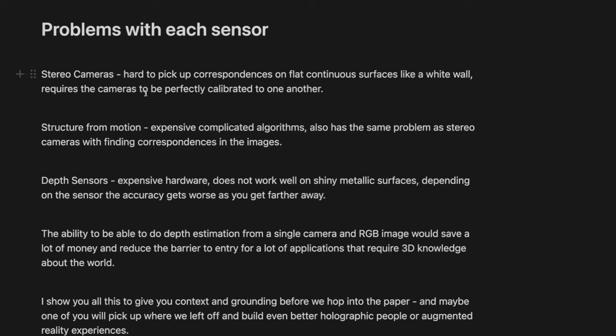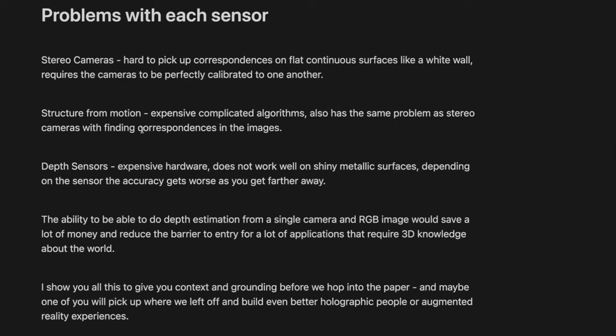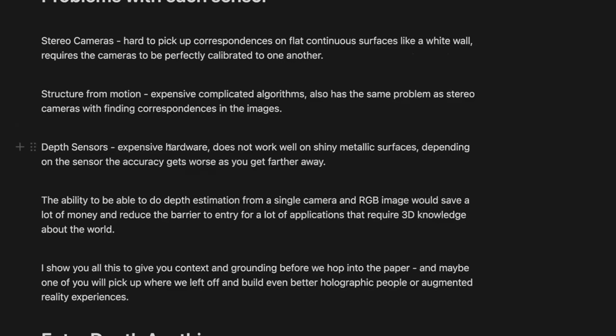And finally there are depth sensors like LiDAR or structured light that have additional sensors within your camera to project dots into the field and have an infrared camera pick up the pattern and reconstruct the 3D object — things like the depth sensor on the front of your iPhone, and now they have a LiDAR on the back. There are a lot of problems with each one of these sensors beyond the fact that they're more expensive than just having a pure RGB camera.